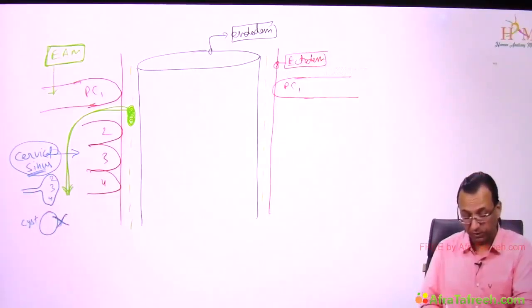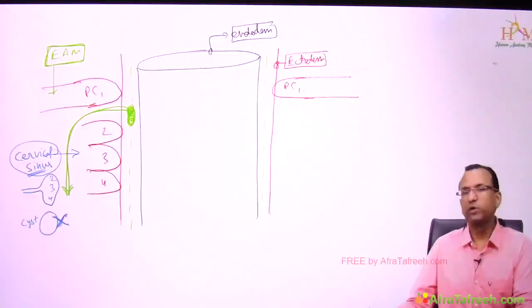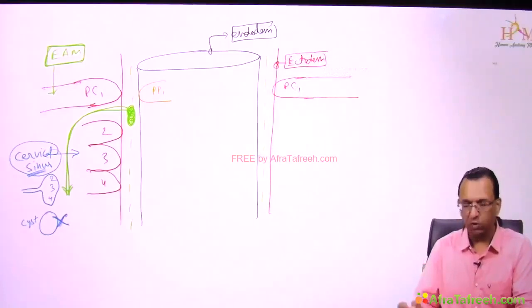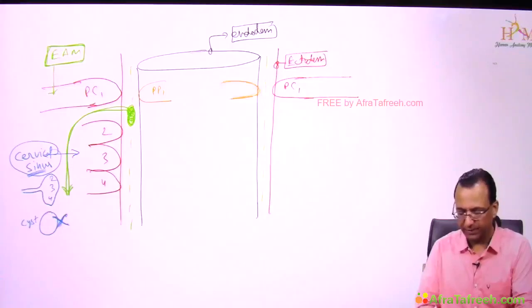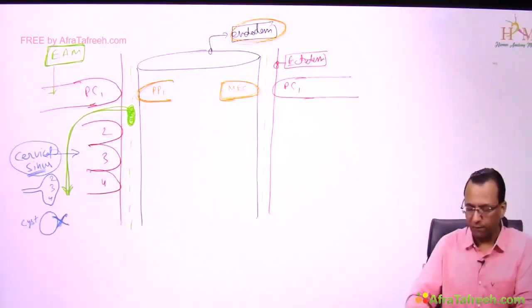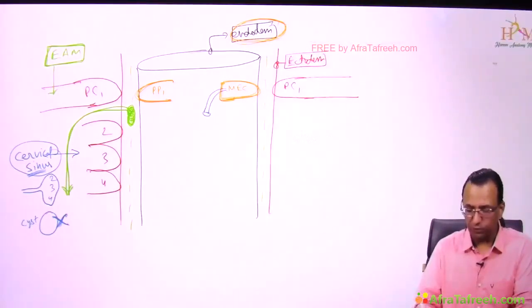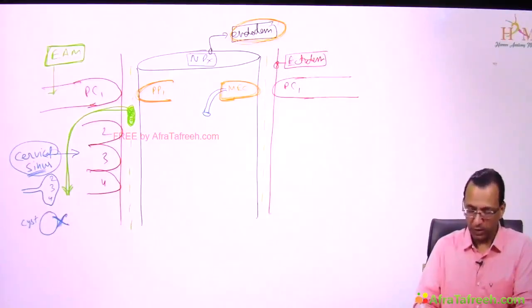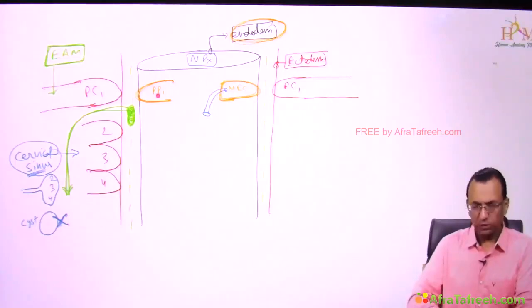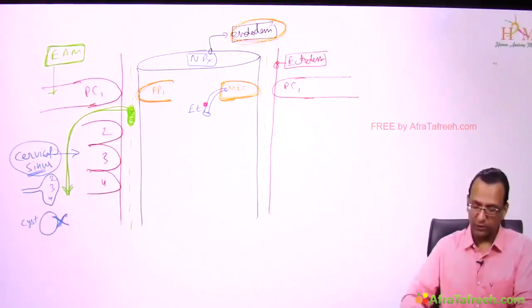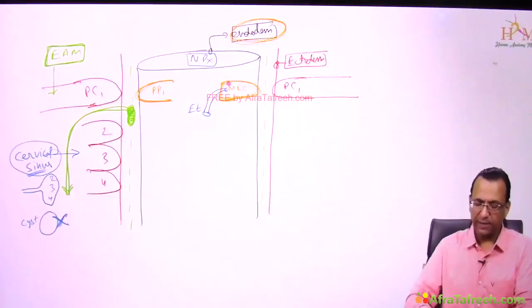Pouches are lined by endoderm on the inside of the lateral wall. Pouch 1 will form the middle ear cavity and the Eustachian tube, communicating with the nasopharynx — with epithelium from the endoderm of pouch 1. The tympanic membrane separates the middle ear cavity from the external ear canal.